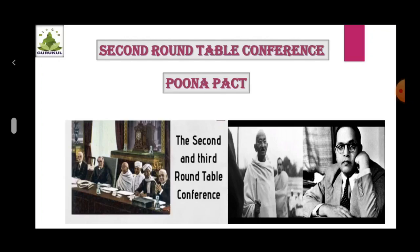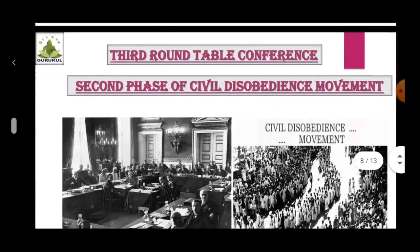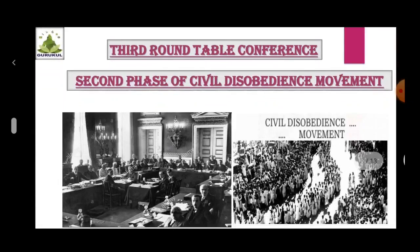Third Round Table Conference: In November 1932, the 3rd Round Table Conference was organised in England. The Indian National Congress boycotted the conference and thus this conference proved to be futile.